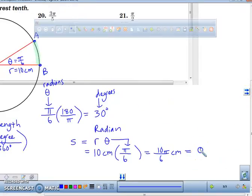My exact answer, everybody, would be 5 pi over 3 centimeters. My approximate answer, I believe, is 5.2 centimeters. So this would be my approximate answer.